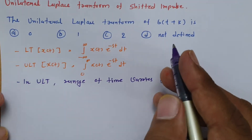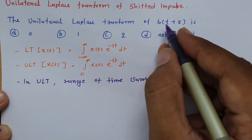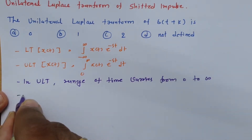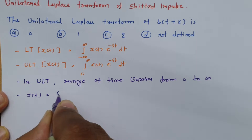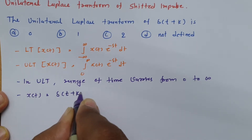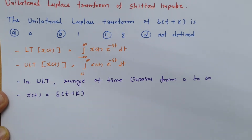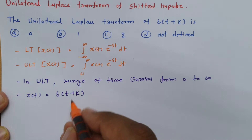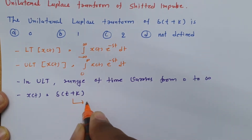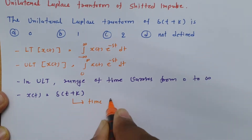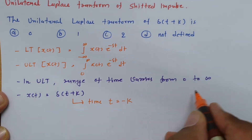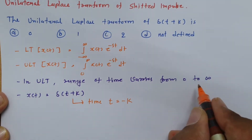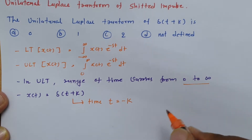Now we have the question for δ(t+k). Here x(t) = δ(t+k). For this impulse, the event is happening at t = −k. So t = −k is not coming in the range of 0 to infinity.